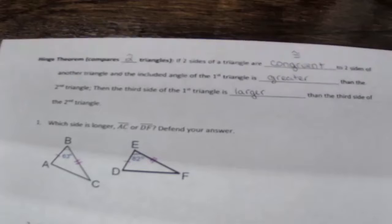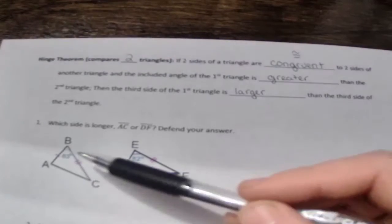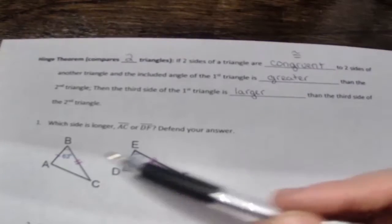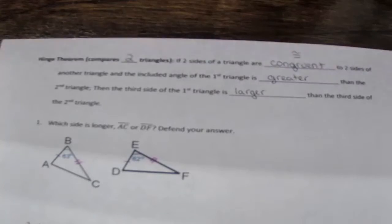So let's look at this one here for number one: which side is longer, AC or DF? Defend your answer. Now when we do this one, for Hinge Theorem you have to have two sides congruent. So they do have that - this side is congruent to this side, this side to this side.